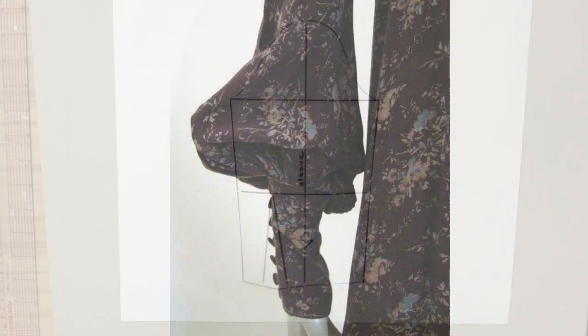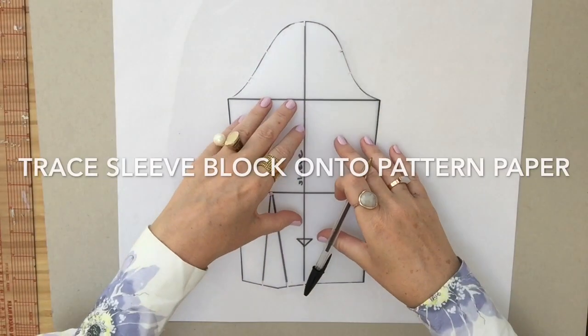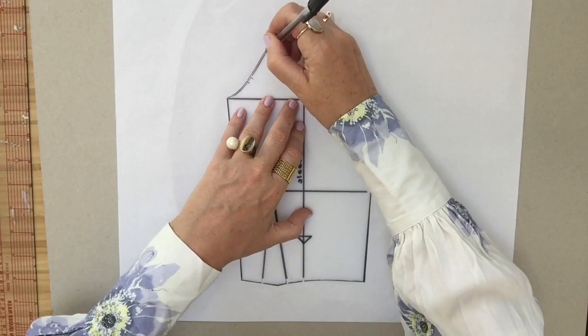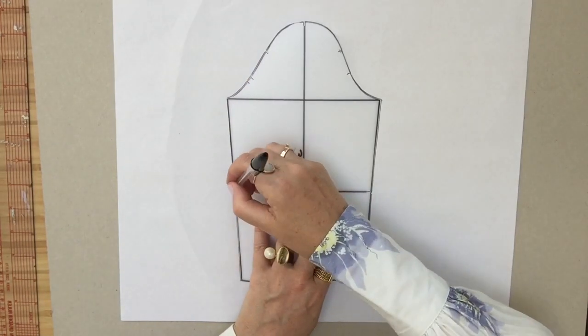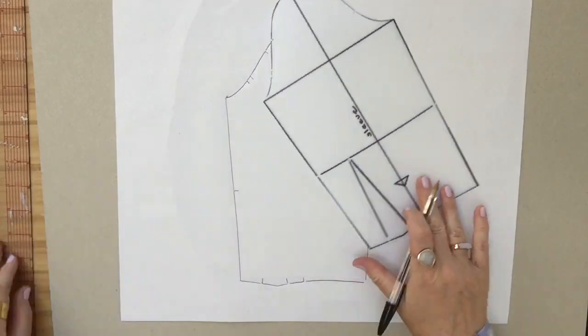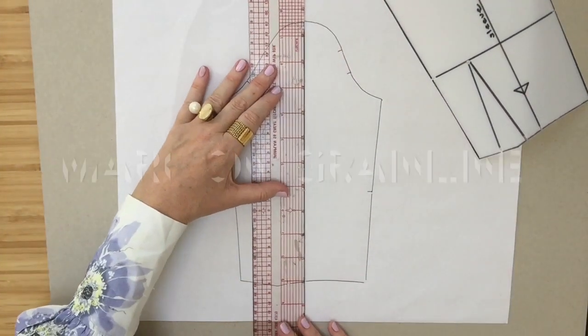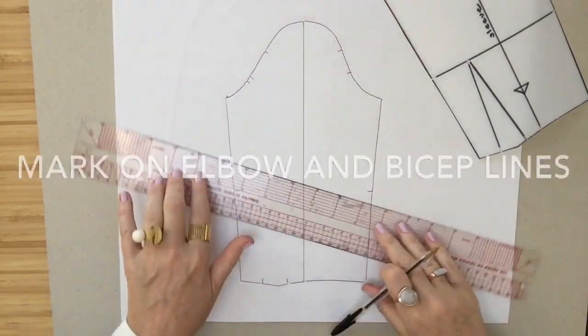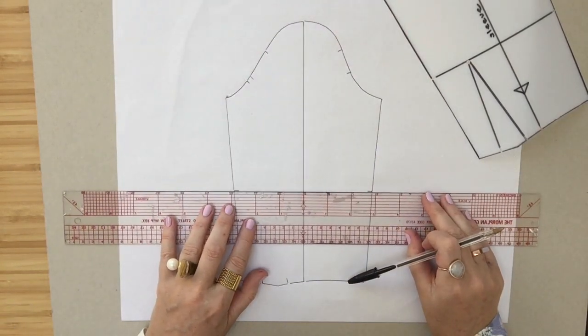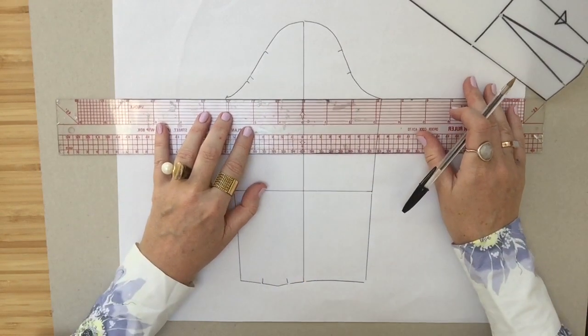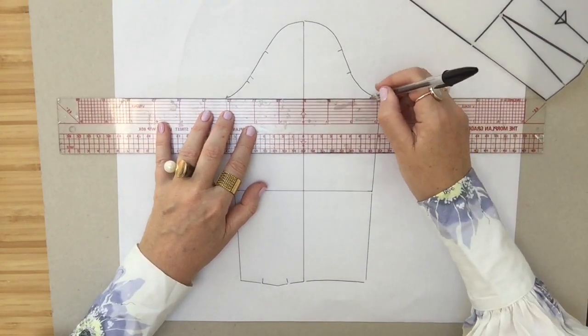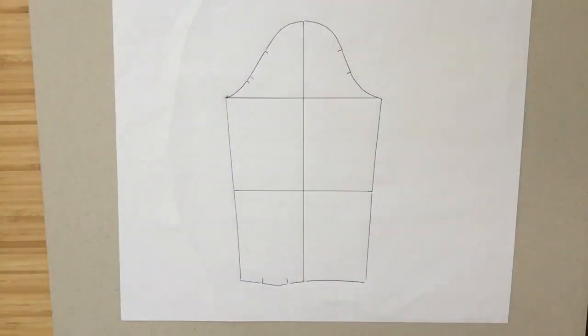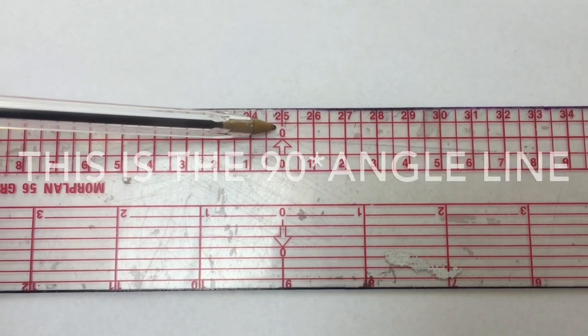To start off, we need to trace our sleeve block onto pattern paper, or in this case I'm using A3 layout paper. Once we have traced off the sleeve and added in the central grain line and also the elbow and bicep lines, you will notice I haven't traced off the wrist art. This is because this is the area I want to add volume and I don't want the fit from the wrist.